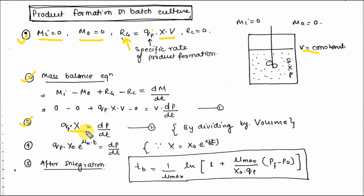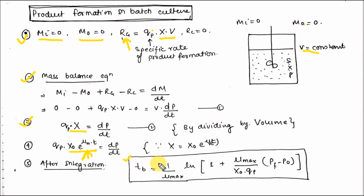Put the value of X: X equals X₀·e to the power Mu_m times t, as established in the biomass production and growth kinetics section. Substituting and integrating gives the batch time for product formation: TB equals (1/Mu_m) times ln[1 plus Mu_max·(Pf minus P₀) divided by (X₀ times Qp)].